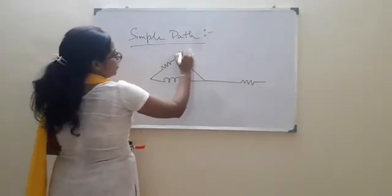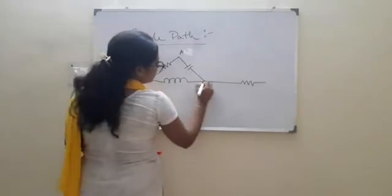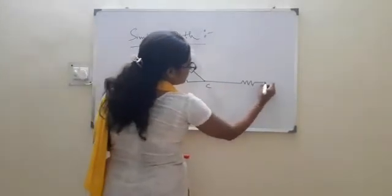If we denote this node as A, this is B, this is C, and this is D.